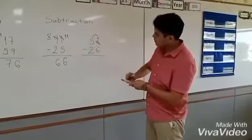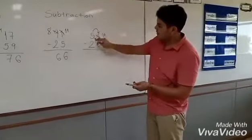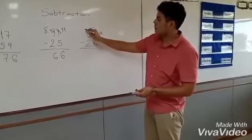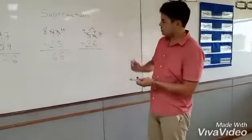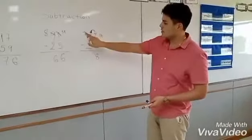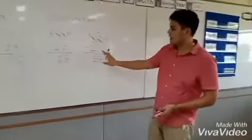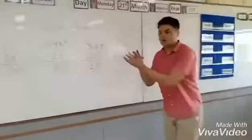So this 4 will become 14, and this one will become 4. So 14 minus 6 equals 8, and 4 minus 2 equals 2. 54 minus 26 equals 28.